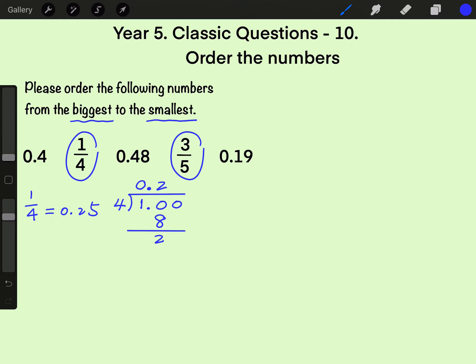Now, 2 on the tenth position equals to 20 on the hundredth position. So, on the hundredth position, 5 times 4 is 20. 20 minus 20 is 0. That's why one quarter equals to 0.25.